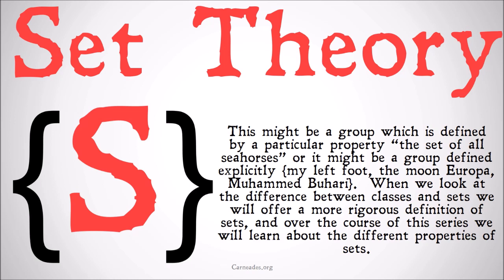This might be a group defined by a particular property. So we could have the set of all seahorses — they're defined by the property of being a seahorse. Or it may be a group defined explicitly. We could say the set of my left foot, the moon Europa, and Mohamed Buhari, the president of Nigeria.